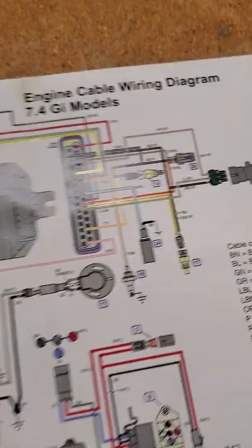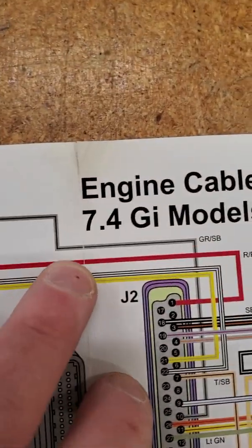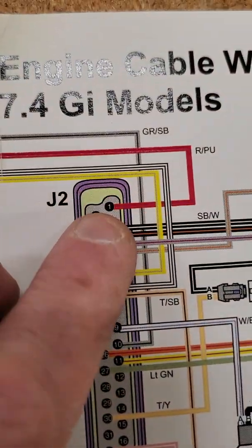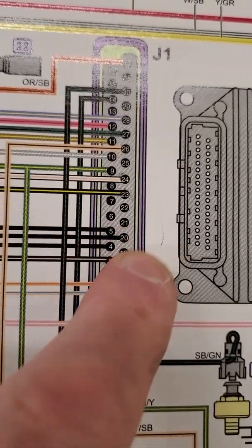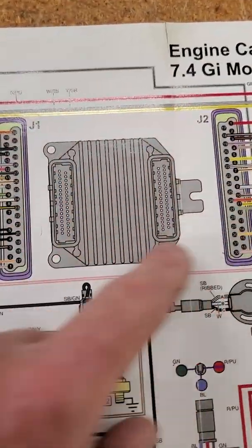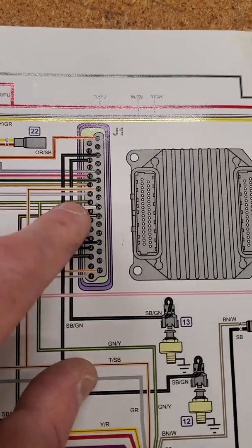And then if I go over to a 454, a 7.4 GI MEFI 3, same thing applies. J21 is constant power, J232 is the wake-up, and then your three grounds. So that really is the only thing that I really need to know other than the data stream.